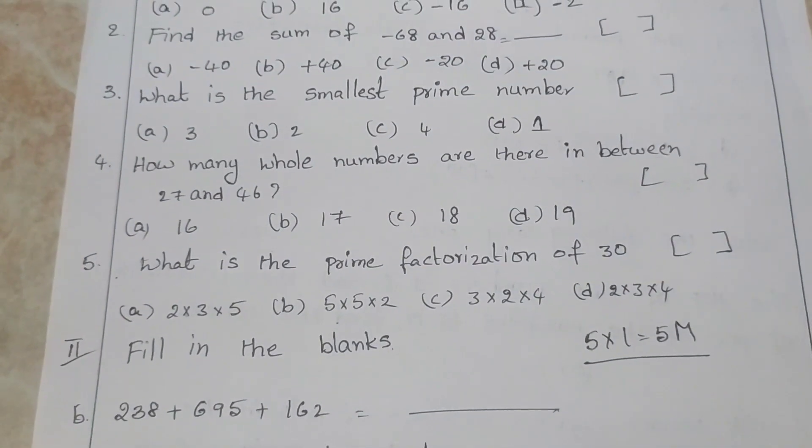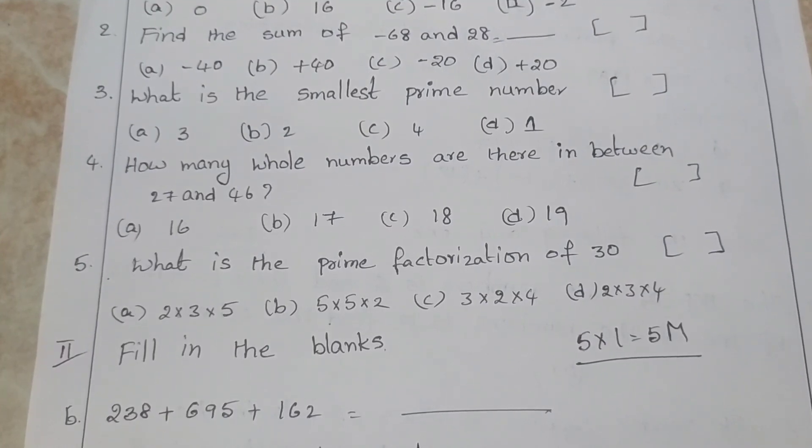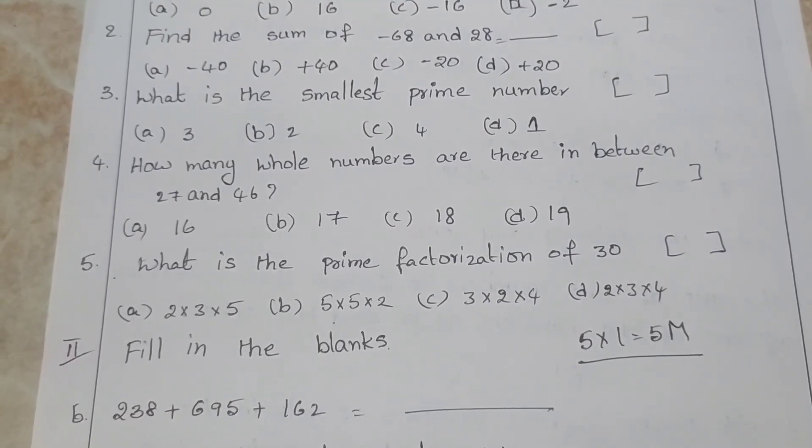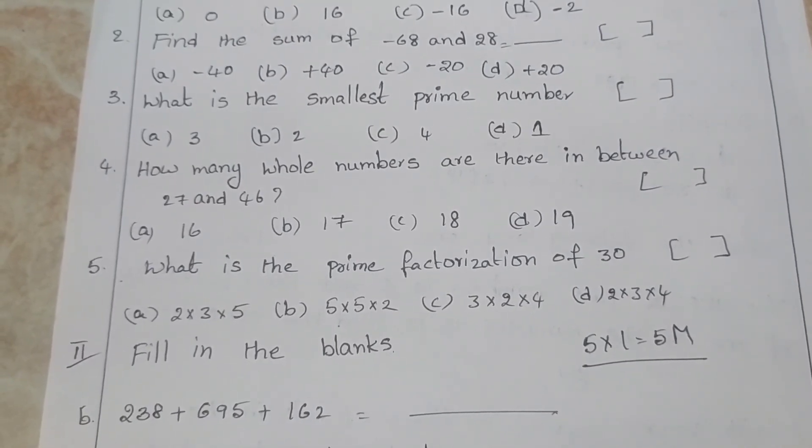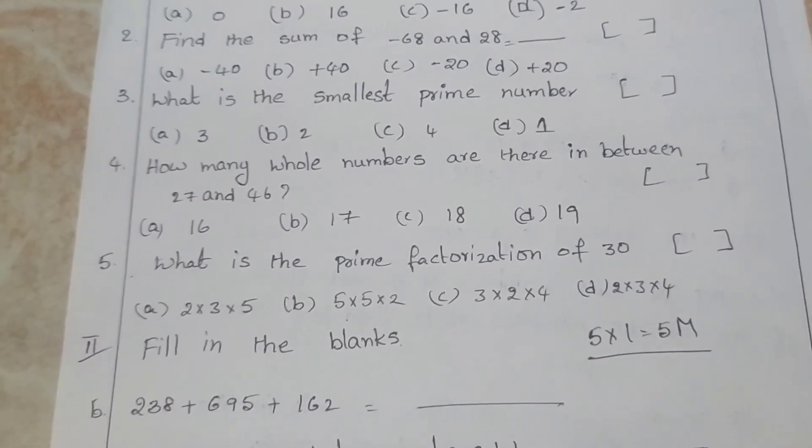What is the prime factorization of 30? 2 × 3 × 5, 5 × 5 × 2, 3 × 2 × 4, 2 × 3 × 4.